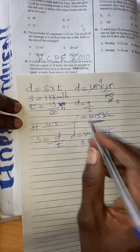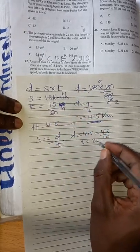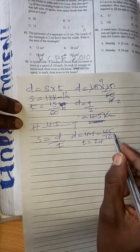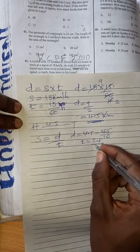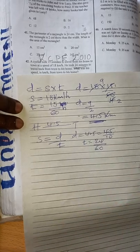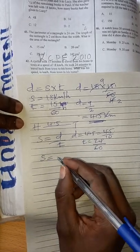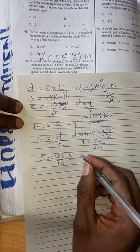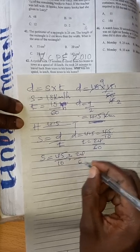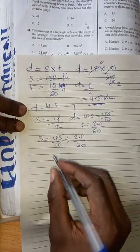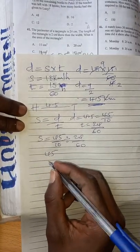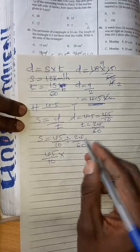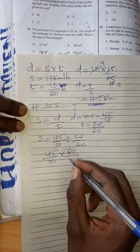The time it took is 24 minutes. And because this one is now in kilometers, you put it over 60. So to get speed, you are going to say 45 over 10 divided by 24 over 60, which translates to 45 over 10 times, now the reciprocal, 60 over 24.